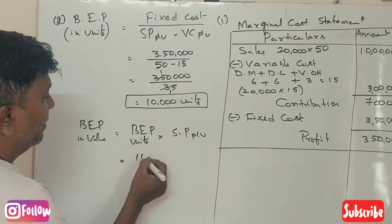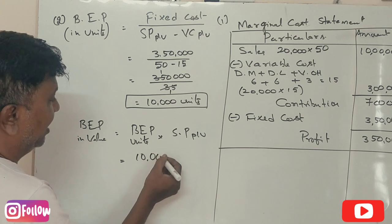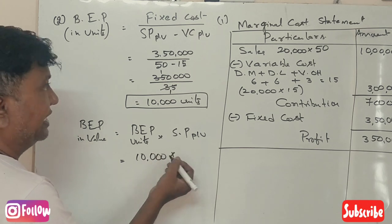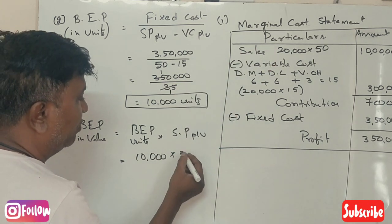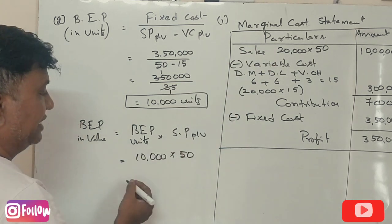Break-even point is 10,000 units. The selling price per unit is ₹50, so break-even sales value is 10,000 × ₹50 = ₹5,00,000.